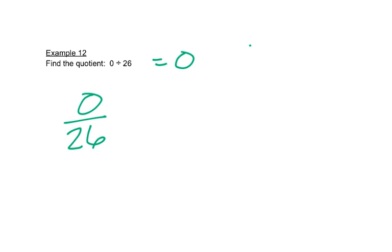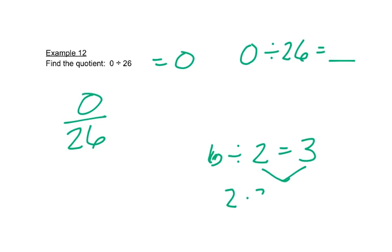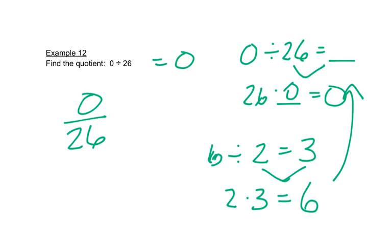In this problem, we have zero divided by 26, and we're trying to find the answer. Well, let's look at another problem for a second. Let's do six divided by two, and that answer is three. And that's because we can rewrite this as a multiplication problem. We can say two times three equals six, and that's probably the way you learn to divide. When we said six divided by two, you said, okay, well, two times what equals six? Okay, if we go back up to this problem, then we're really saying 26 times what equals zero? Well, that has to be zero, because any number times zero is zero. So that's why this answer is zero.